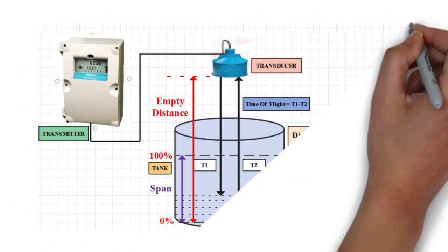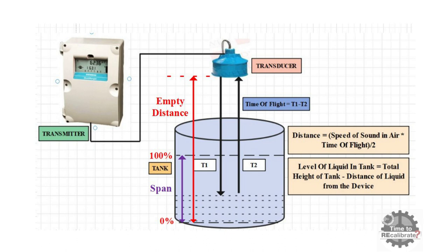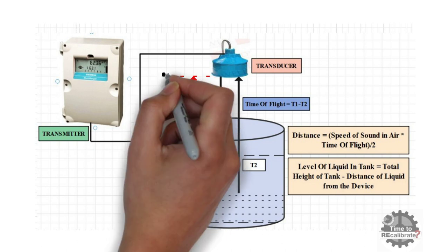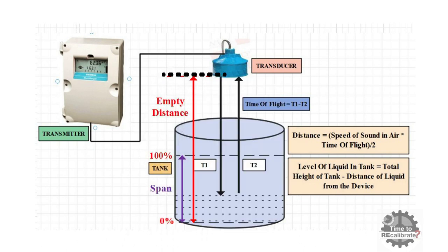First of all, let's start with empty distance. Empty distance can be defined as a distance from the sensor to the bottom of the tank or 0% level of tank. You have to have correct empty distance for ultrasonic level measurement.